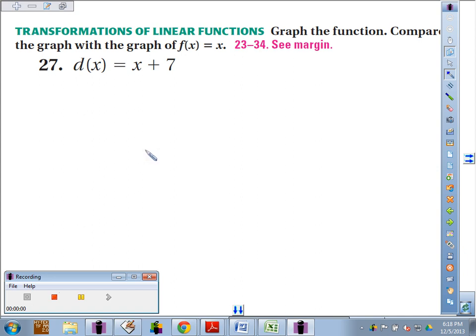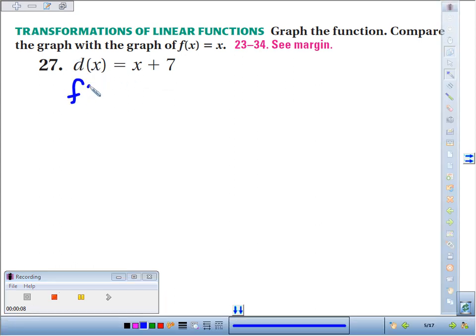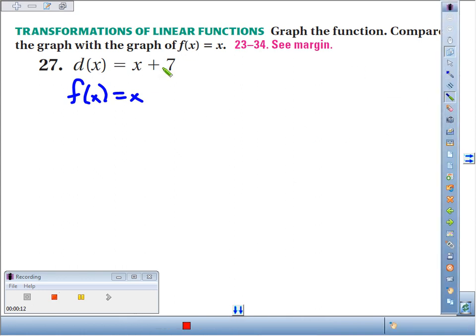For 27, we talked about just graphing the evens, so for 27 all we're going to do is the comparison piece. We're going to compare d(x) = x + 7 to the parent function f(x) = x. You can see the difference between the two functions is that d(x) has this extra plus 7.